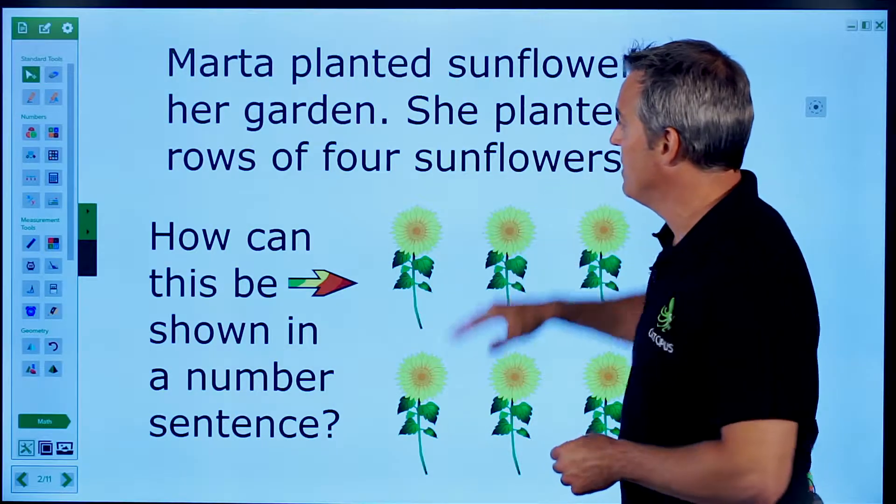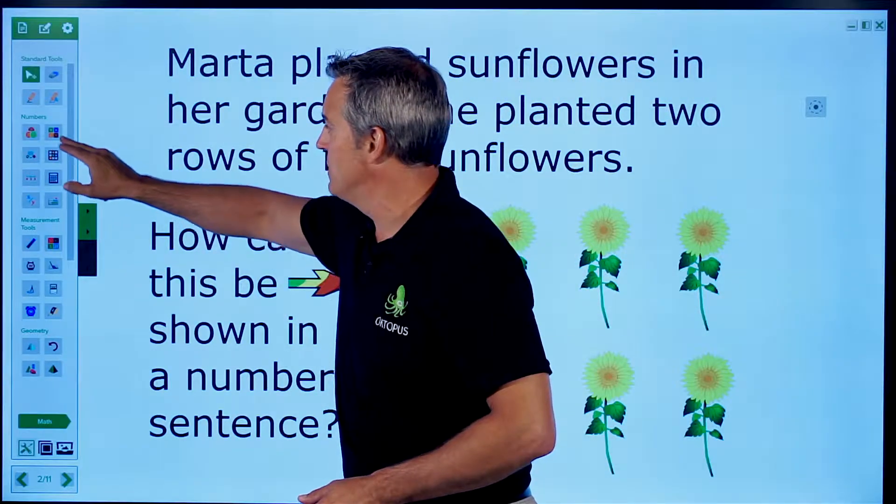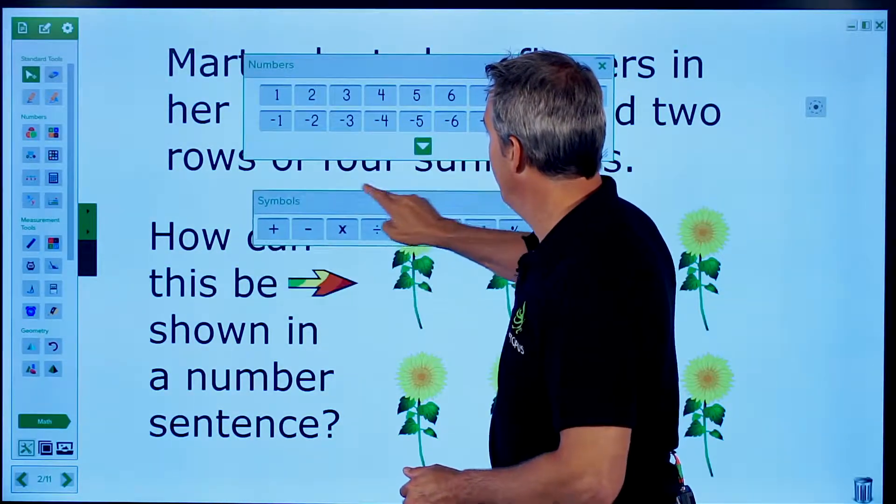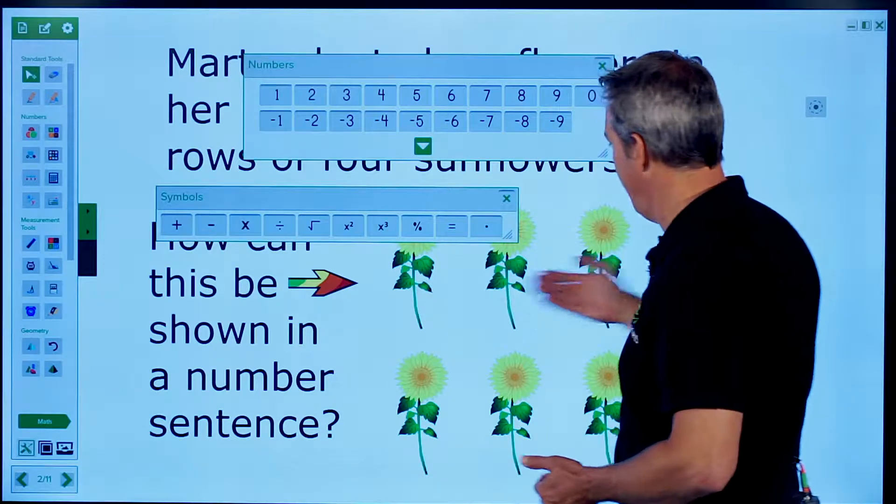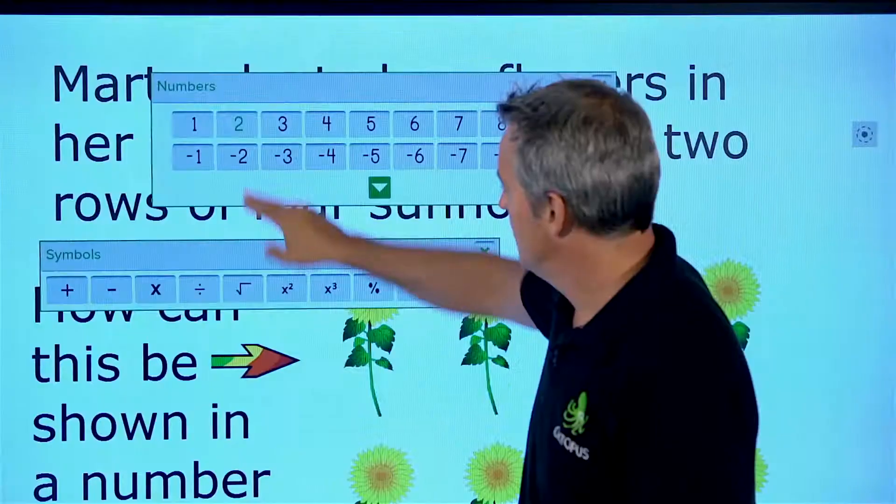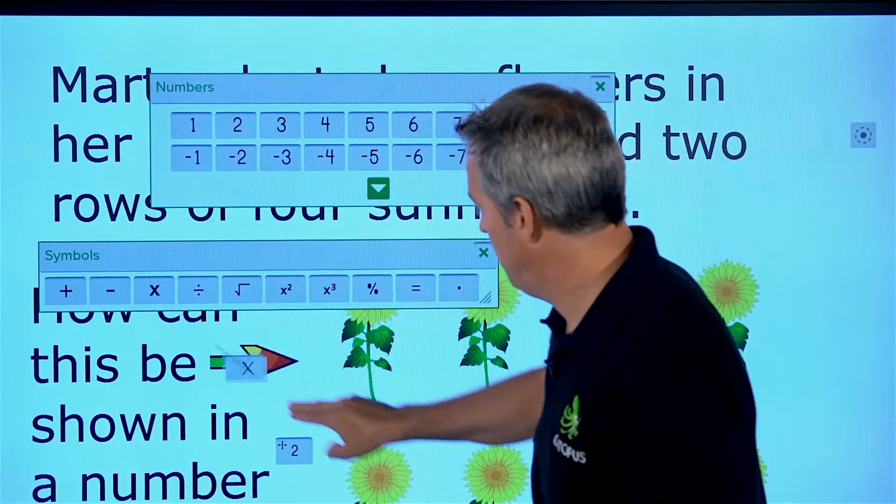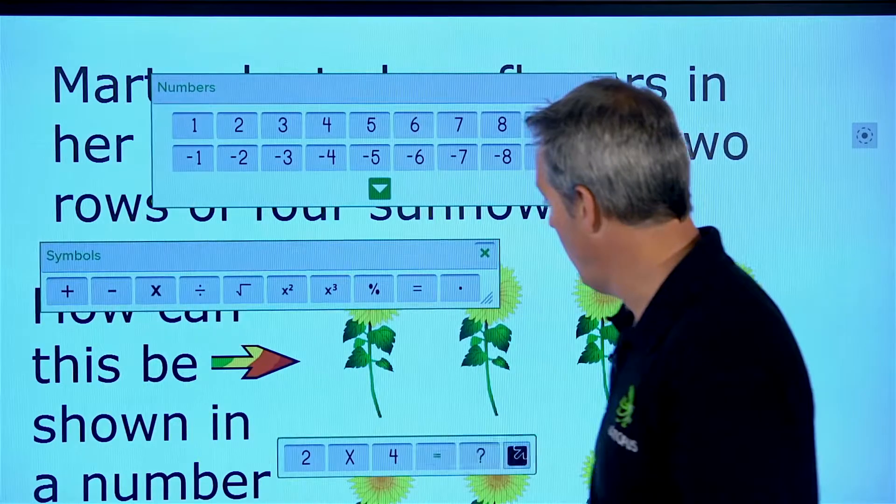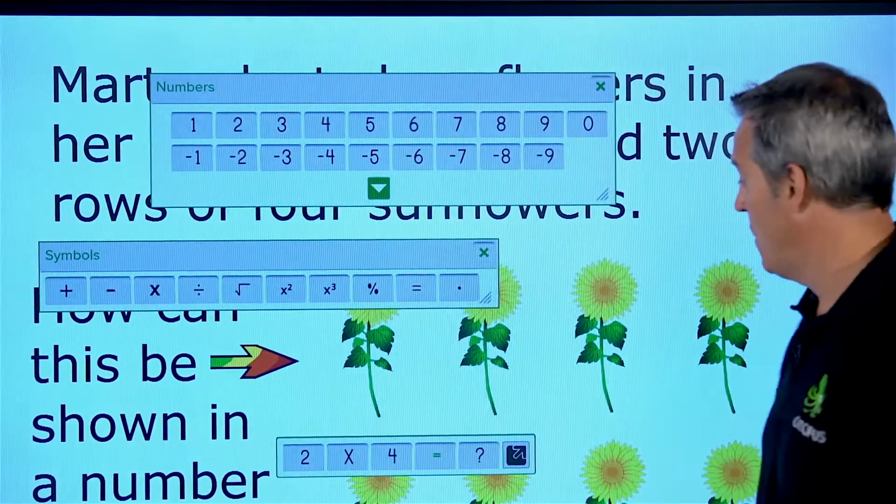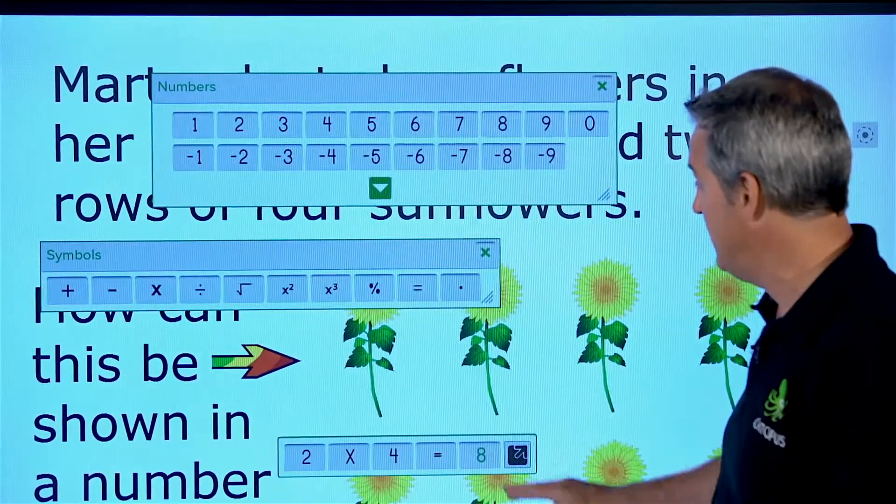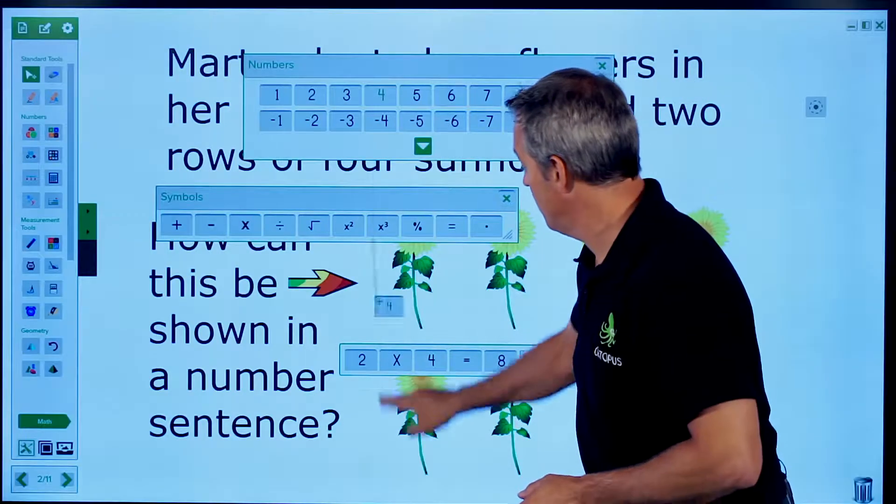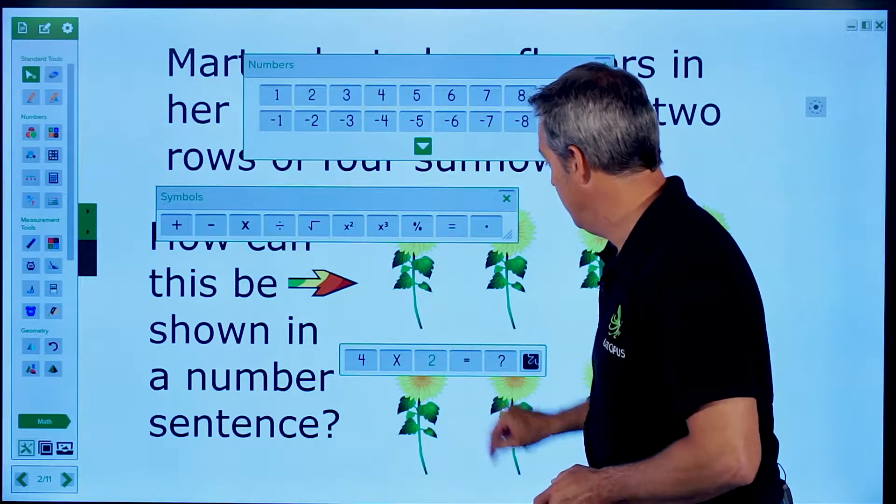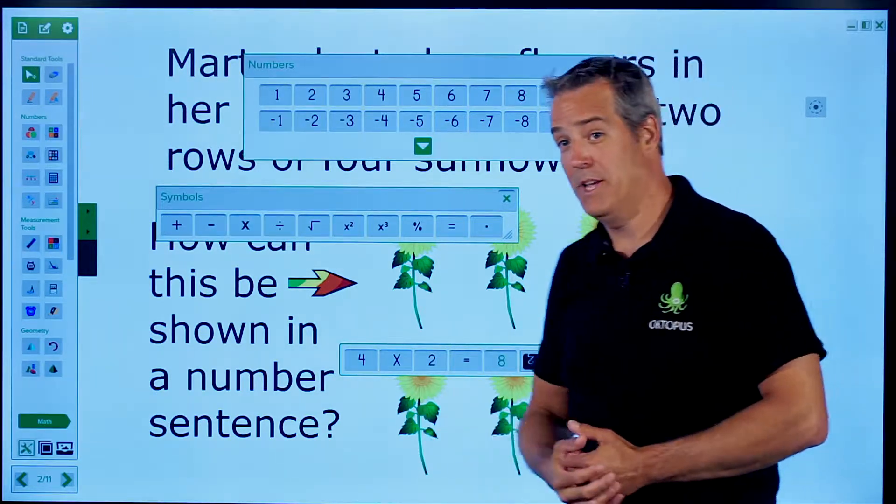And we're talking about number sentences. So I might actually have students build a number sentence. I can bring up my tools here. And what might that look like if I've got two rows of four? So maybe that looks like two times four equals, right? So I can build a number sentence like that. And of course, the answer is eight. Of course, I can also illustrate the concept that four times two also equals eight.